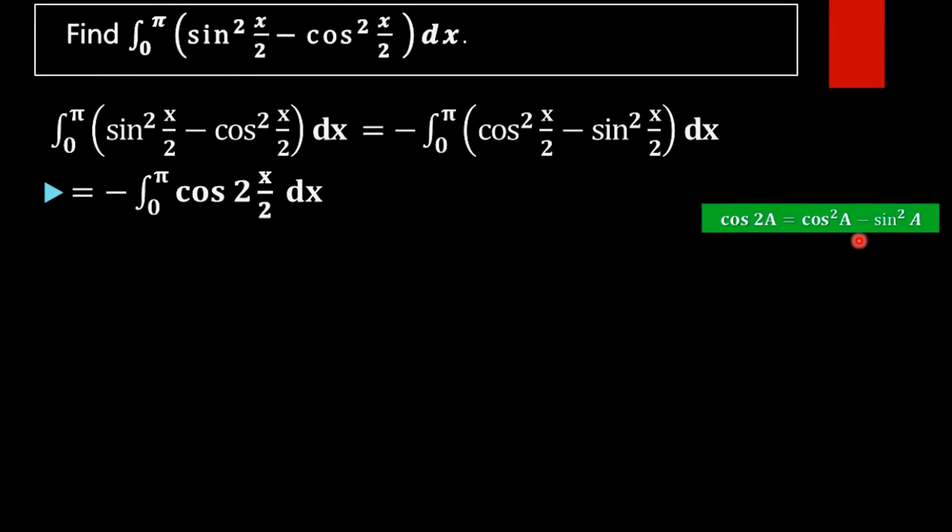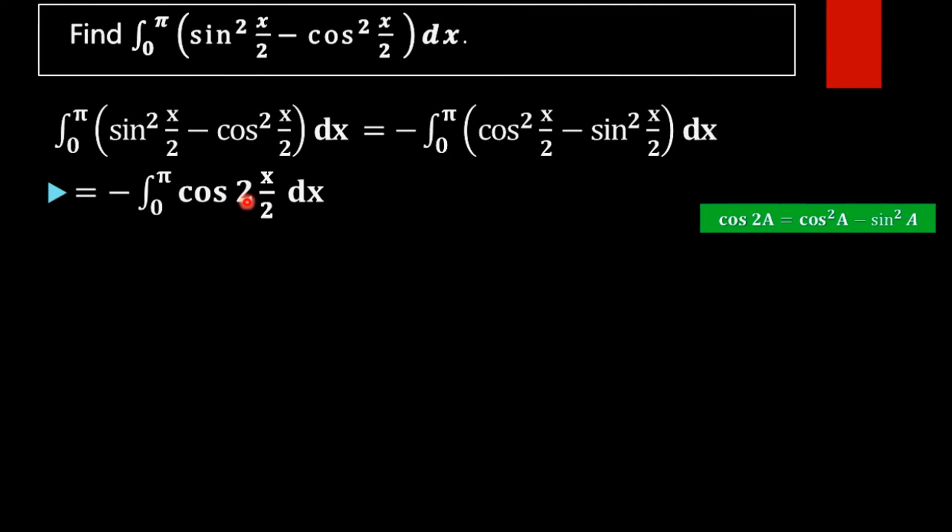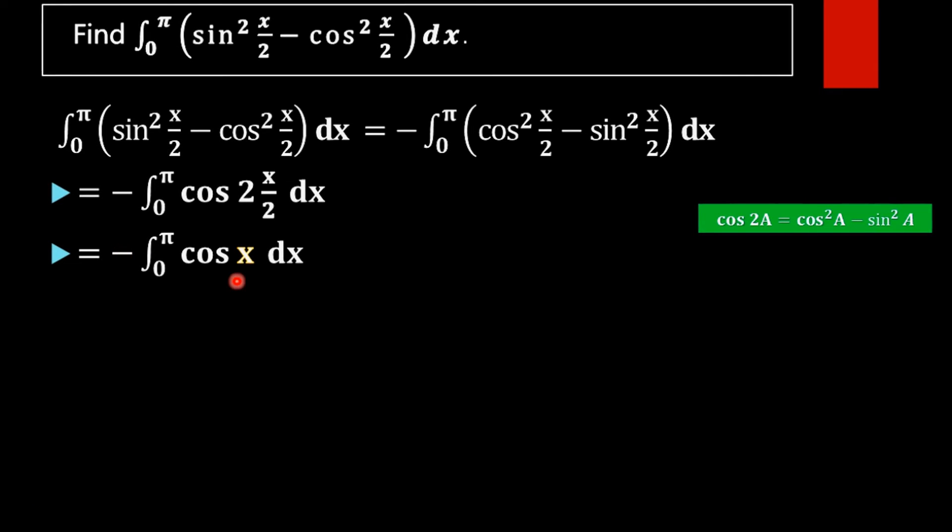What is cos 2 into x by 2? That is, if it is a, then the value is 2a. Okay, here a equal to x by 2, then 2a equal to 2 into x by 2. Now cancelling 2s, we will get minus integral 0 to pi cos x dx.